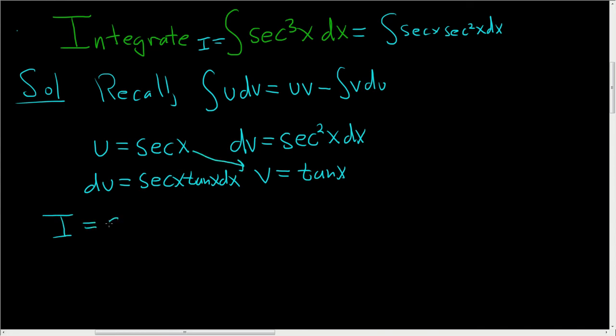So i is equal to uv. So secant x tangent x minus the integral of vdu. So it looks like secant x tangent squared x dx.